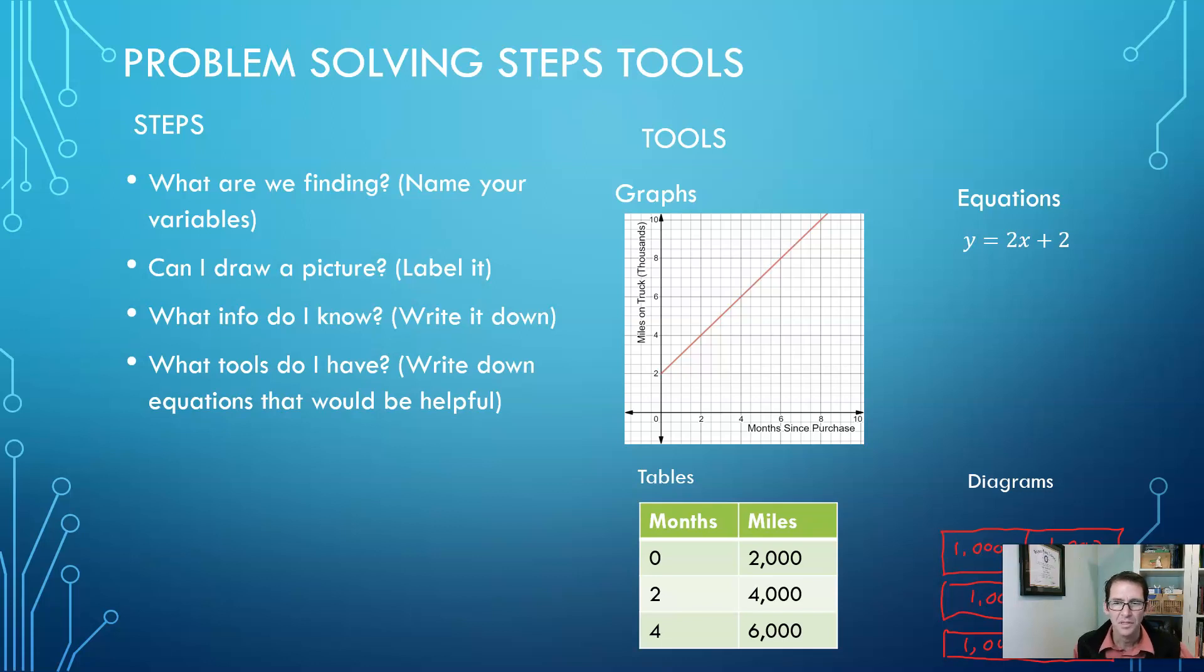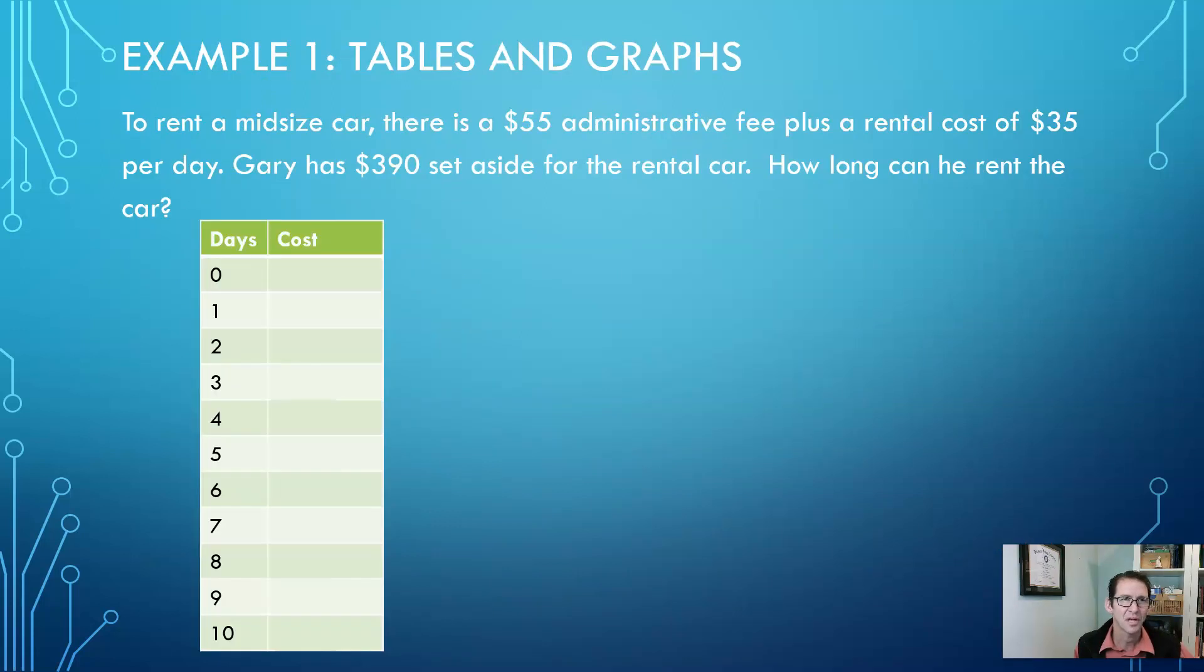In example one, I'm going to take a look at tables and graphs. Here's the problem: to rent a mid-sized car, there's a $55 administrative fee plus a rental cost of $35 per day. Gary has $390 set aside for the rental car. How long can he rent the car? Well, one approach would be to start with your $55 fee and build on that. So on day zero, I'm going to call that $55. You don't get to even have the car for a day unless you pay that $55. But then if you want to keep it for a day, you're going to pay $90 because $35 more than the $55.